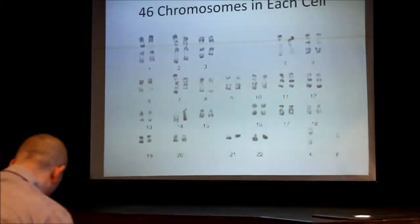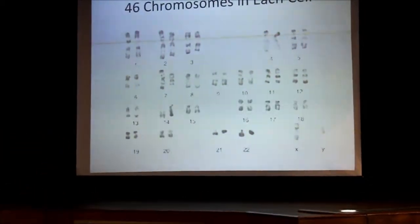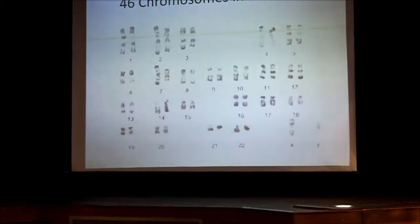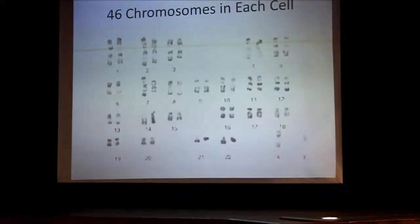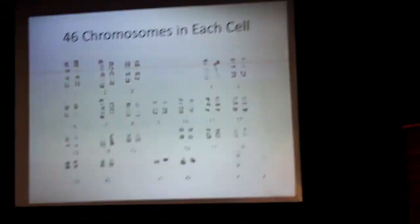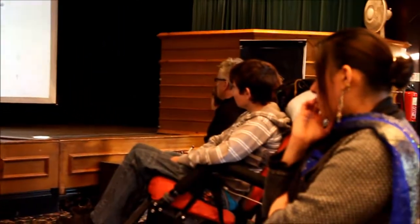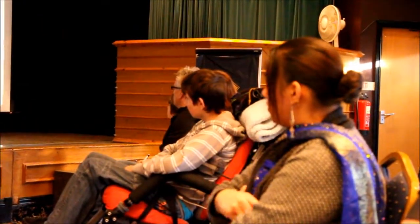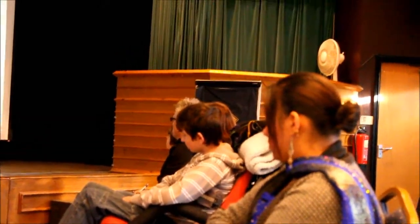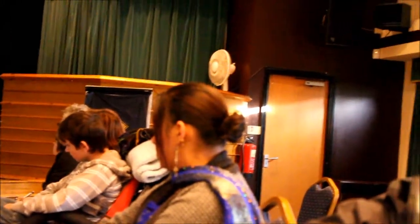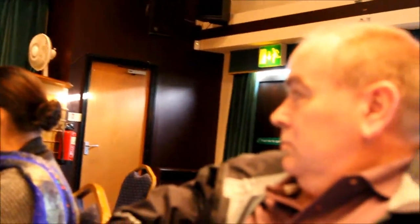When the cytogeneticists who are doing chromosome tests sort those out to have a look at them and check we've got the right number, they count them all and also check that we've got 23 pairs of chromosomes. So we've got 46 altogether, arranged in pairs, and we number them from 1 down to 22 depending on how big they are.